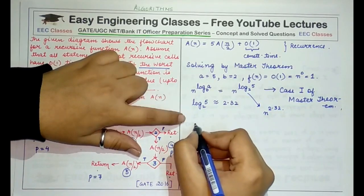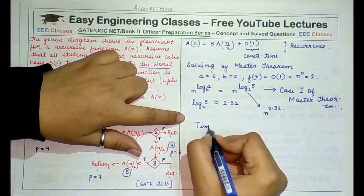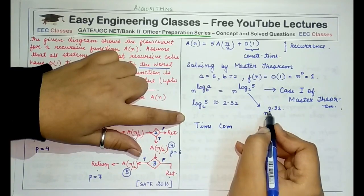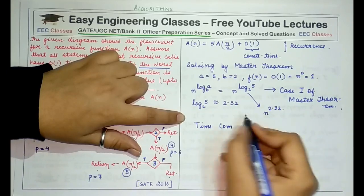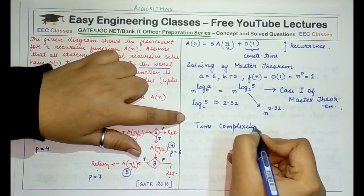And here the value that we have calculated for n to the power log of a base b is n raised to power 2.32. So what would be the time complexity in this case? Time complexity would be n raised to power 2.32.